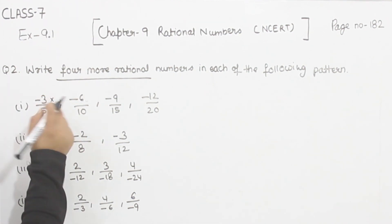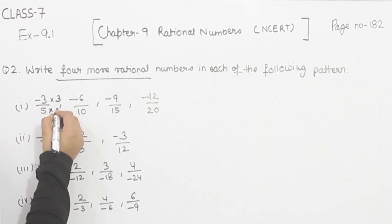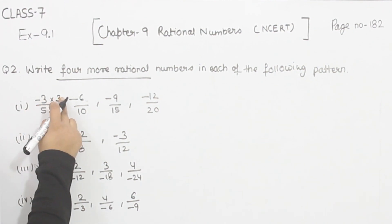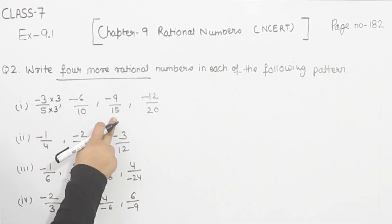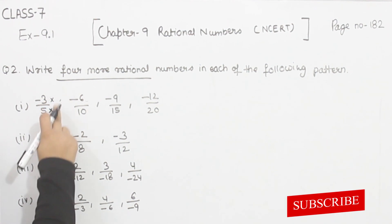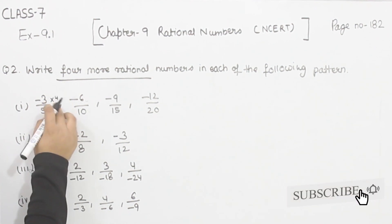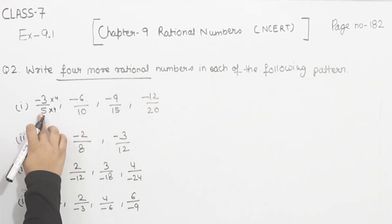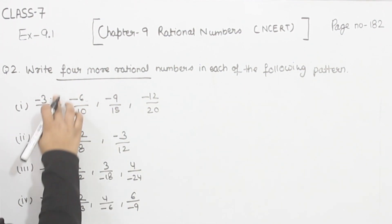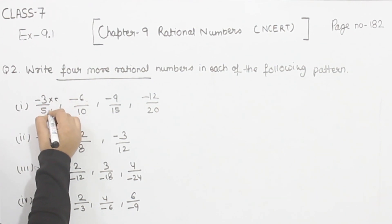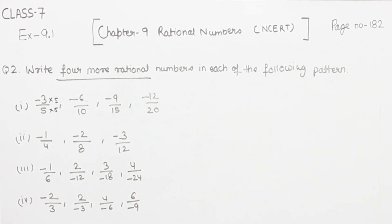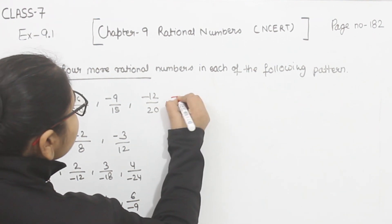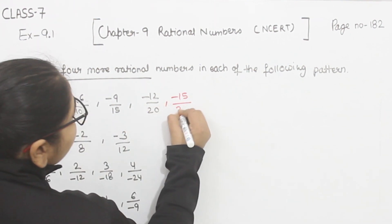Now we are multiplying by 3. So minus 3 multiplied by 3 is minus 9, and 5 multiplied by 3 is 15. For the next one, we have multiplied by 4 — 3 fours are 12 and 5 fours are 20. For the next number, we are going to multiply by 5 — 3 fives are 15 and 5 fives are 25, giving minus 15 by 25.